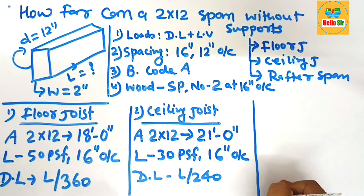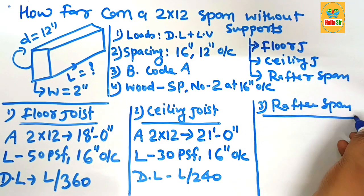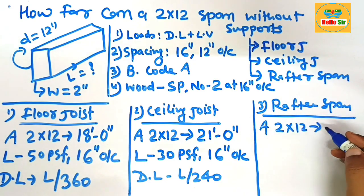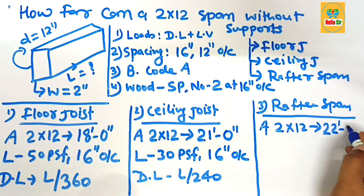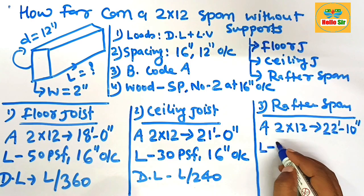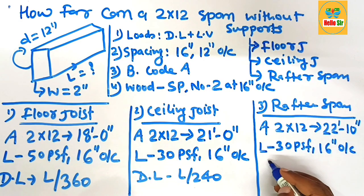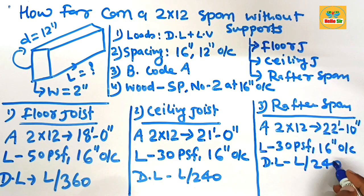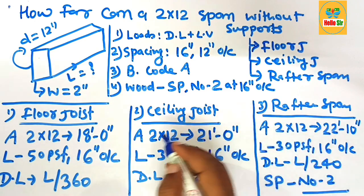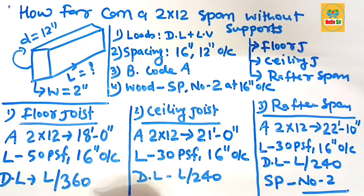The third is the rafter span. What will be the rafter span for a 2x12 dimensional lumber? A 2x12 dimensional lumber as a rafter can span a maximum distance of 22 feet 10 inches — this is the maximum rafter span. The conditions are: load should be 30 pounds per square foot, spacing is 16 inches on center, deflection limit is L/240, and the wood species is southern pine number two grade. This covers the floor joist, ceiling joist, and rafter spans for a 2x12 dimensional lumber. Thank you.